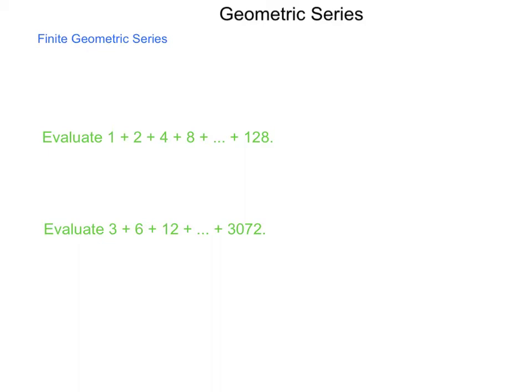The formula for finding the sum of a finite geometric series is S sub n equals a sub 1 times 1 minus r to the n, all divided by 1 minus r. So in order to determine the sum, all you need is the first term, the rate at which they are changing, and how many items are in the series altogether.